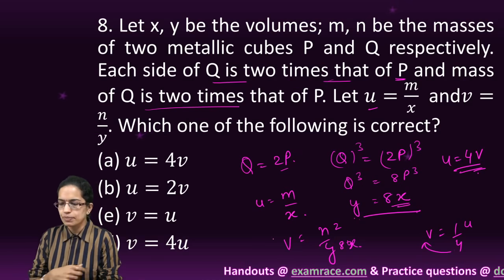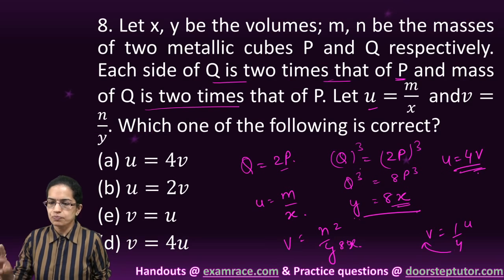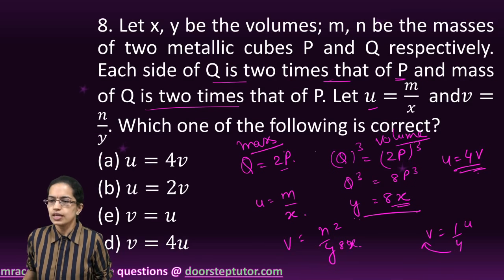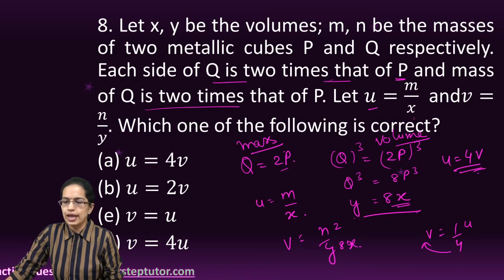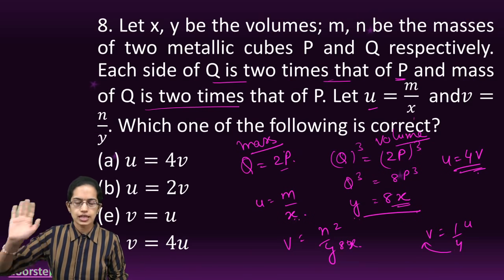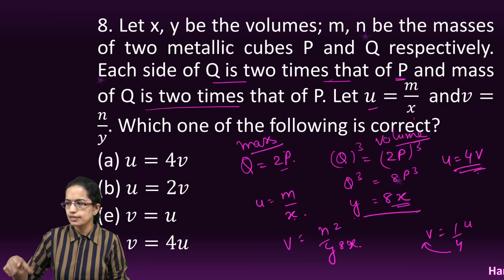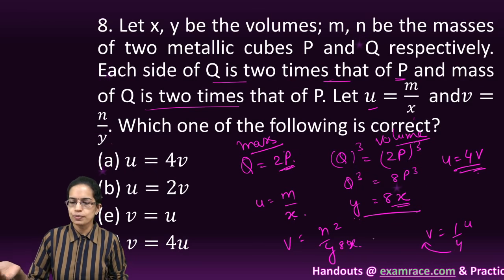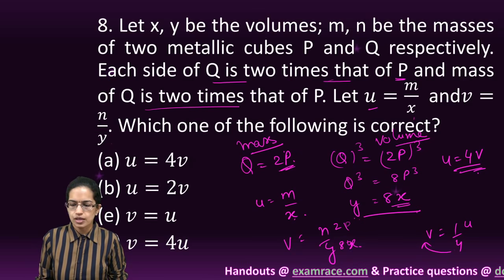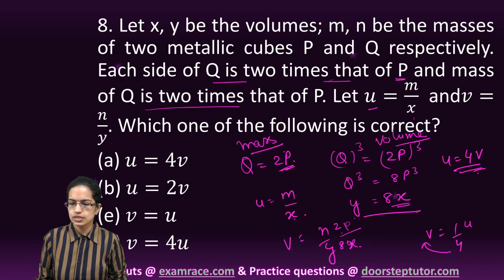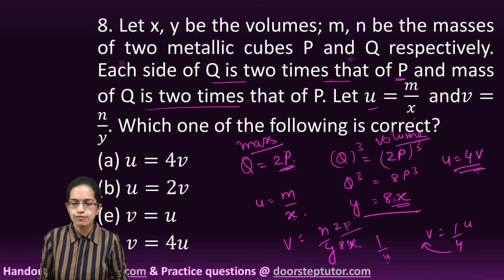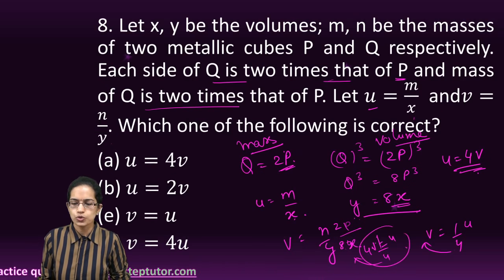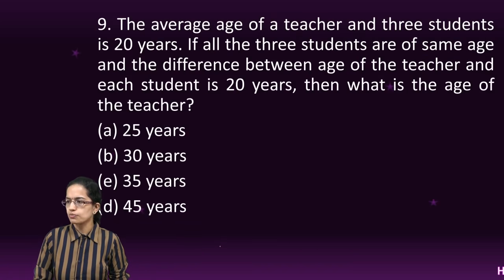For the first case, this is the volume ratio we're trying to find. The mass ratio is already given, then you do M by X. For the second case, N by Y, where N is 2M and Y is 8X, gives 2M by 8X, which is 1 by 4. So 4V equals U. You would have A as the right option.